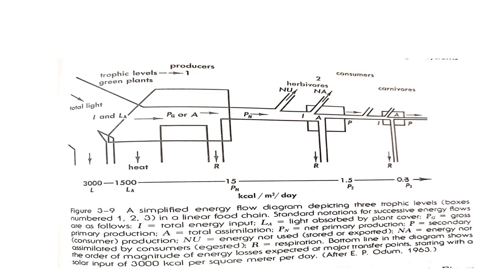The principles of food chains and the working of the two laws of thermodynamics are clarified in this slide. It is a very simplified model of energy flow for three trophic levels. There are producers and herbivores; heat is emitted out of each system, respiration removes energy from the system, and the model is broader at the beginning where total light energy enters the system. Toward the carnivores and consumers, the channels narrow out, meaning energy is lost at every step.